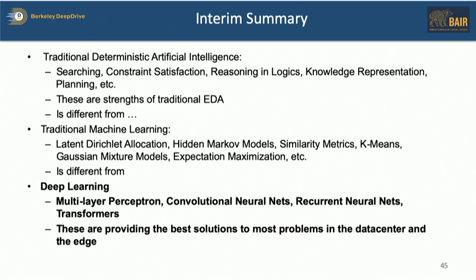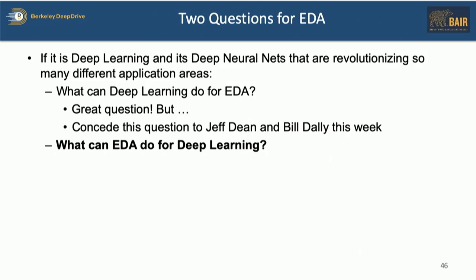Interim summary: AI is not machine learning, machine learning is not deep learning, deep learning is about neural nets, and these are providing the best solutions to the most problems in the data center and the edge. That leads to two questions for electronic design automation: if it's deep learning and deep neural nets revolutionizing so many application areas, what can deep learning do for EDA? That's a great question — Jeff Dean talked about it Monday, Bill Daly spent a lot of Tuesday on it. But as an EDA person, I'm more interested in what EDA can do for deep learning, and that's what I'll spend the rest of the talk on.